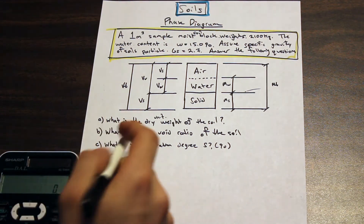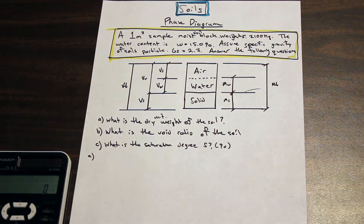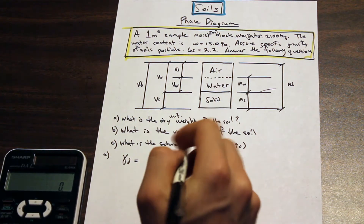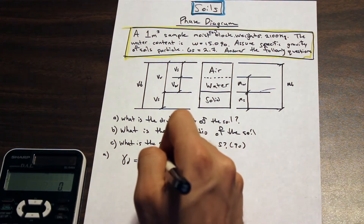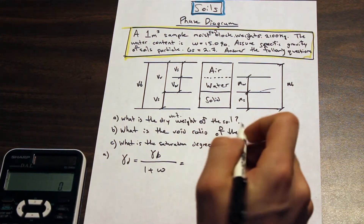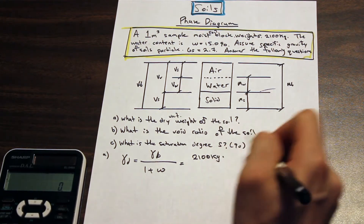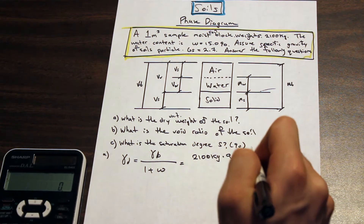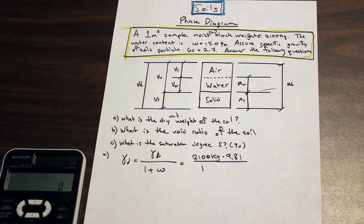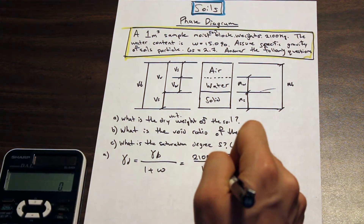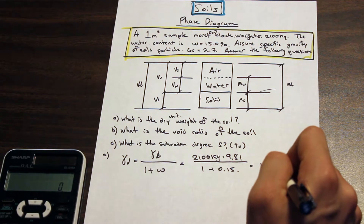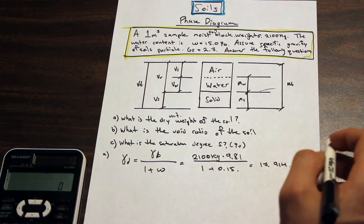Let's get started with part A — the dry unit weight of the soil. The dry unit weight, gamma_d, is equal to gamma_bulk divided by one plus the water content. That is going to be equal to the weight of the sample, which is 2100 kilograms, multiplied by gamma_water (9.81). You can include all the units if that helps you reason through it, and we have 0.15 for the water content. We end up with 17,914.